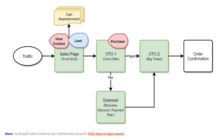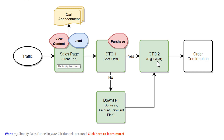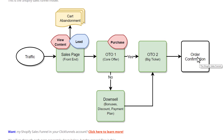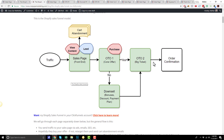This is the structure of the funnel. We have a sales page. If they don't buy the product on the sales page, we have a cart abandonment series. If they do buy the product on the sales page, we'll show them OTO number 1, or one-time offer number 1. Hopefully they buy this and go on to OTO number 2. But if they say no to OTO number 1, we can show them a downsell. Whether they buy the downsell or not, we'll still show them OTO number 2, and then we'll bring them to our order confirmation page. So that's the general structure of the funnel.